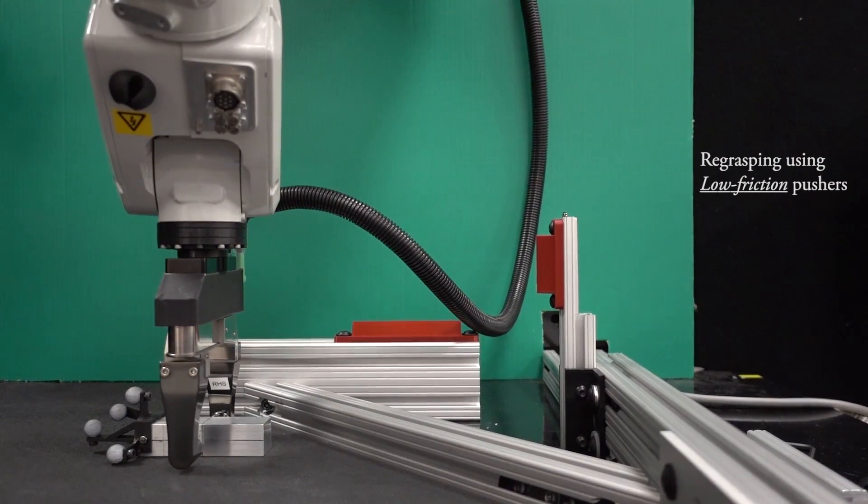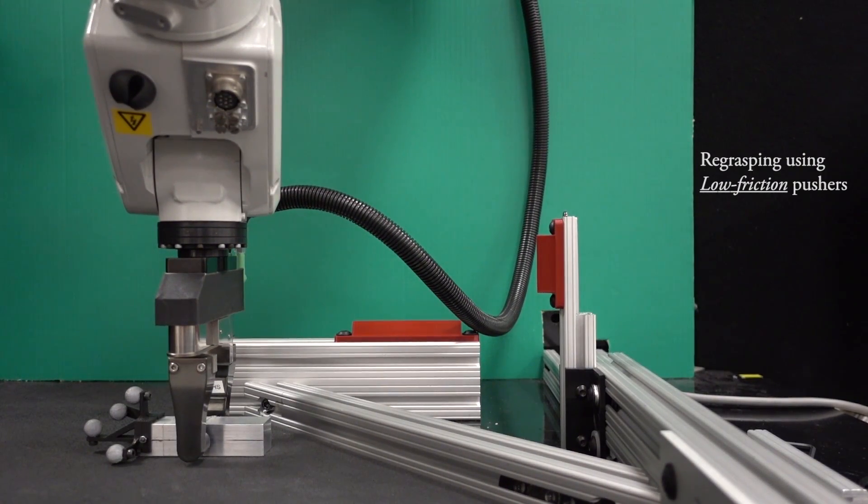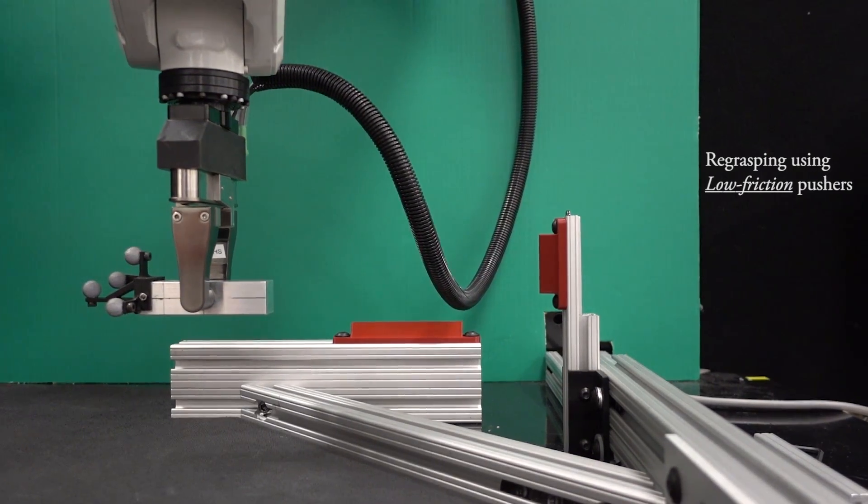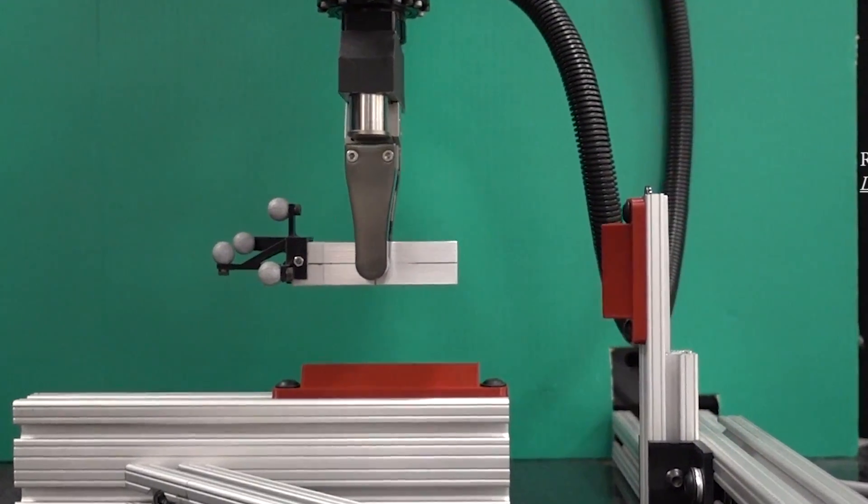When using the pushers with low friction, the robot realizes that simply pushing from the side will not work and it has to use two different contacts to effectively force the object to the desired grasp.